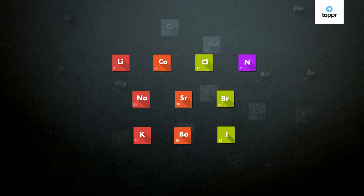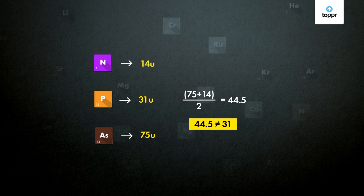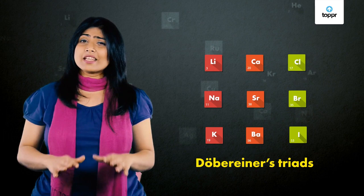But what about other elements with similar properties, such as nitrogen, phosphorus, and arsenic? The atomic mass of phosphorus is not even close to the average atomic masses of nitrogen and arsenic — they clearly do not form a Döbereiner triad. Out of the elements known at that time, only nine could be classified into Döbereiner's triads, meaning only three triads were possible. Unfortunately, Döbereiner's triads were not efficient enough to classify elements.